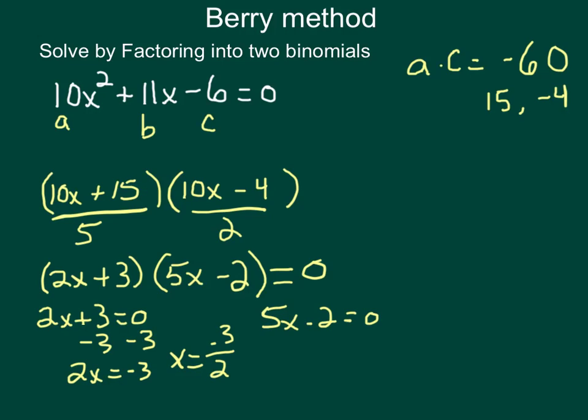On this one over here, I'm going to add 2 to both sides. 5x equals 2, and I'm going to divide by 5, so x equals 2 fifths.